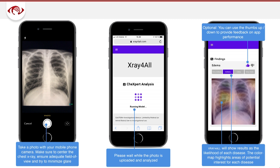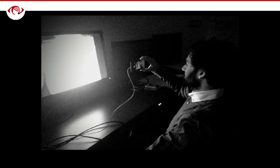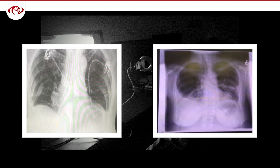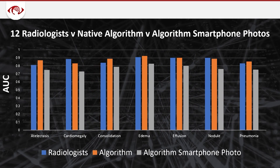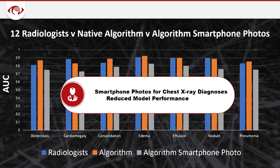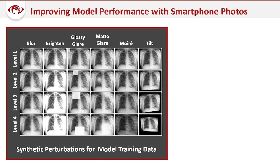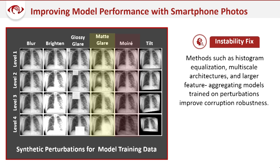We developed an app — done by Amir Kiani in the Andreessen lab — where you can take a picture of either a screen or a film and potentially receive a diagnosis to help you make a decision about your patient. One thing about smartphone cameras is they don't always faithfully reproduce what they photograph. There's Moiré artifact when you take a picture of a screen, and glare from taking a picture of a film. This reduces model performance to a level too low for clinical use. We've been working on a project using synthetic perturbations specifically targeting Moiré artifact and glare artifact to address these shortcomings, and our trend line is going back up toward clinical viability.